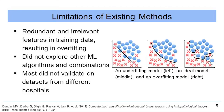First, existing methods often use redundant and irrelevant features in their training data, resulting in overfitting as shown in the right-most graph. Second, existing methods do not explore other machine learning algorithms or combinations of these algorithms. Third, most do not validate on datasets from different hospitals and hence may not generalize well.